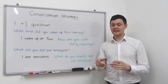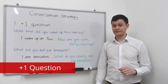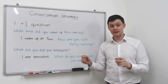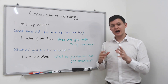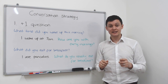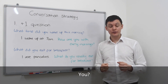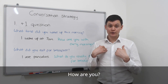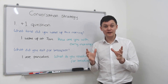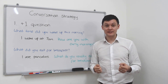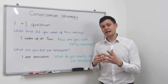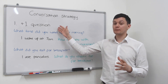Our second strategy today is the plus one question. This is a question you add at the end of your basic answer to keep the conversation going. I think you're familiar with the most common plus one question — and that's: How about you? So someone says: How are you? And you answer: I'm good. How about you? That's a plus one question. But that one is so common, don't overuse it — it will sound very boring if you keep saying: You? So today we're going to learn some variety for the plus one question.